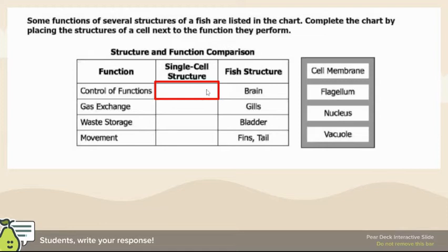Looking at cell functions: the brain or control of functions corresponds to the nucleus. The site for gas exchange like gills compares to the cell membrane, which controls what goes in and out. Waste storage like the bladder corresponds to the vacuole. Movement like fins and tail corresponds to the flagellum.